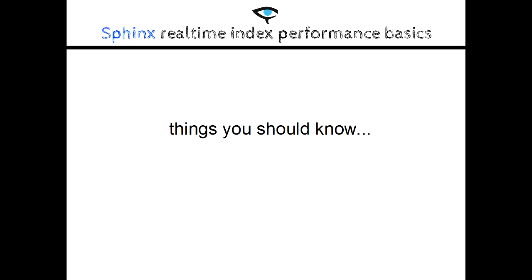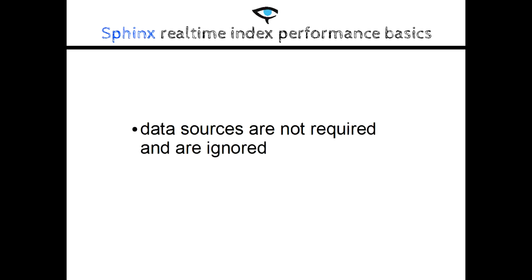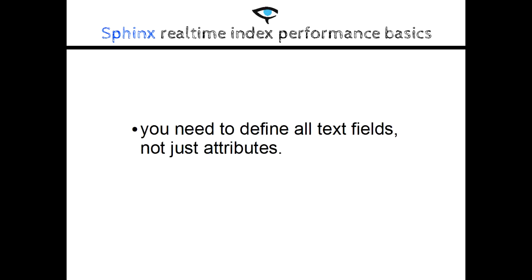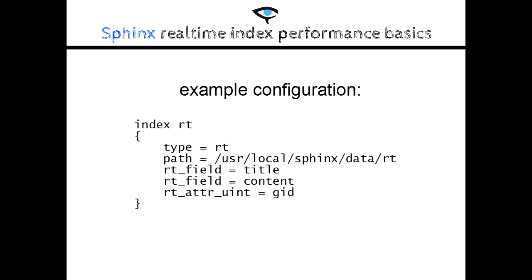First of all, real-time indexes should be declared in the Sphinx configuration, just as the other index types. But there are a couple important differences you should remember. One, data sources are not required. And two, you should explicitly enumerate all the text fields, not just the attributes. Here's an example. Notice the two full-text fields and an unsigned integer attribute.